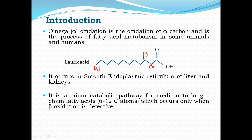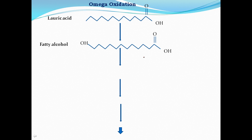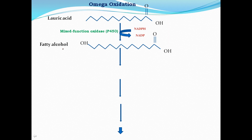Now let us look at the steps of omega oxidation of fatty acids. The first step is the introduction of a hydroxyl group onto the omega carbon, forming a fatty alcohol from lauric acid. This is carried out by the mixed function oxidase, which is a complex reaction involving cytochrome P450 and the electron donor NADPH.